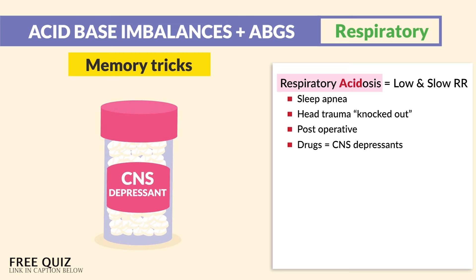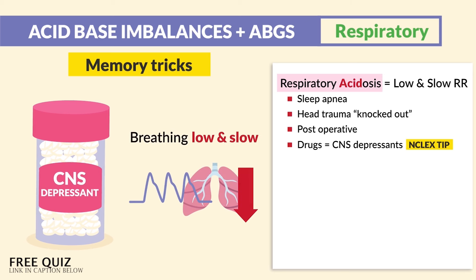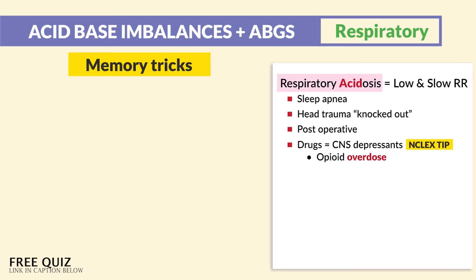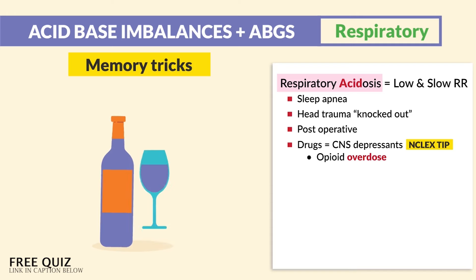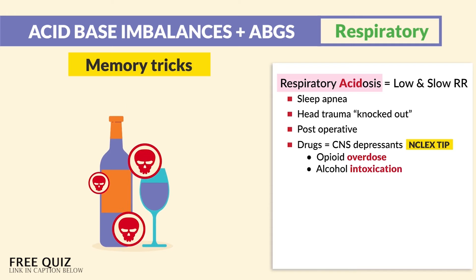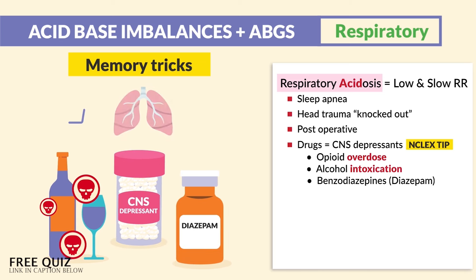Now for drugs — CNS depressants — this one's huge on exams, so write these down. They make breathing low and slow, and vital signs low and slow in general. This includes opiate overdose: morphine, hydromorphone, etc., as well as alcohol intoxication — that's a big one — and benzodiazepines ending in -pam and -lam, like diazepam. All CNS depressants slow the breathing, putting the body in acidosis.